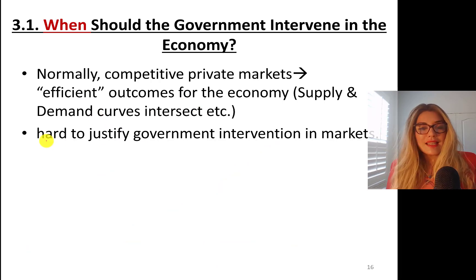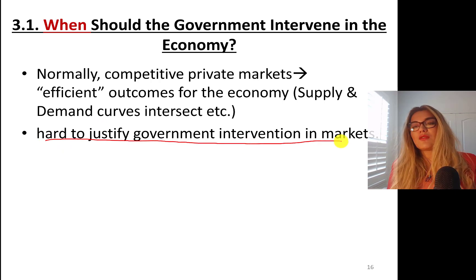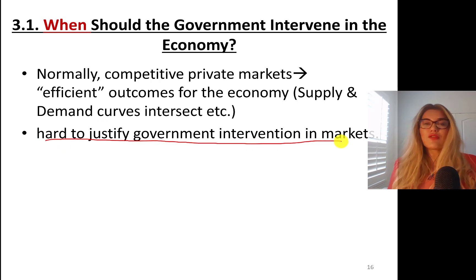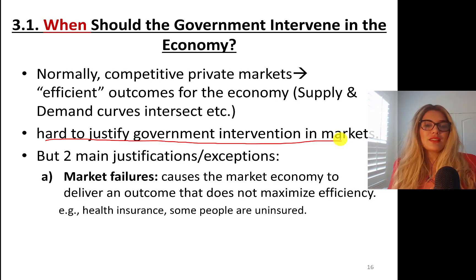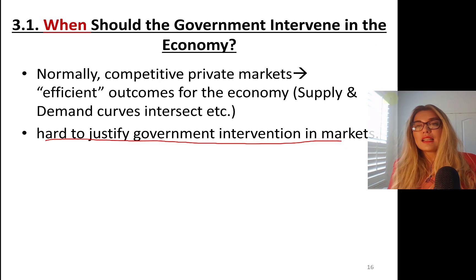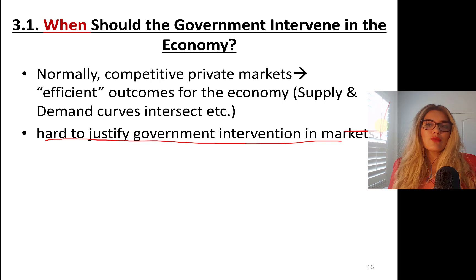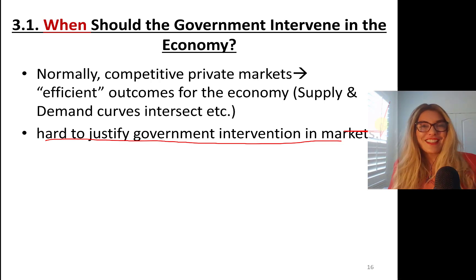In these cases, it's hard to justify government intervention in markets. If you have a market that's working well and everybody's happy with the outcome, there's no need for the government to intervene. For instance, the government doesn't intervene in, let's say, Justin Bieber cancelling his world tour, because why should the government intervene in a private decision?